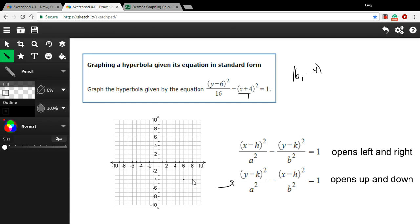And the next thing we do is we draw a rectangle. We get the dimensions of that rectangle from these denominators. So whatever under the y, in this case, this a, it's going to be 2a units tall, this rectangle. It's going to be up a units and down a units from the center.